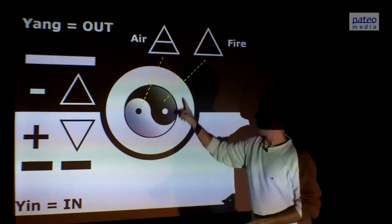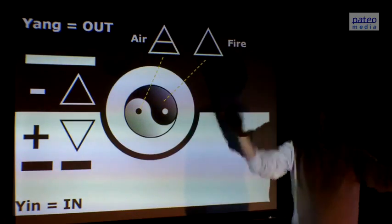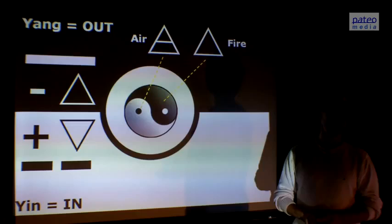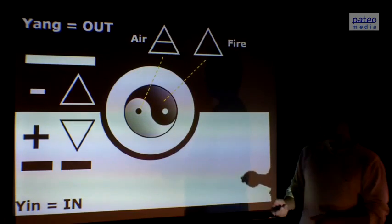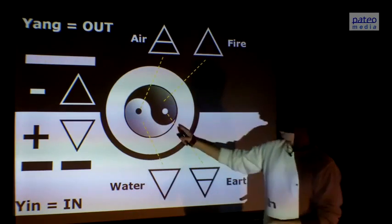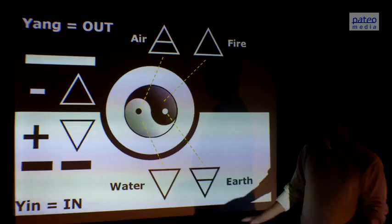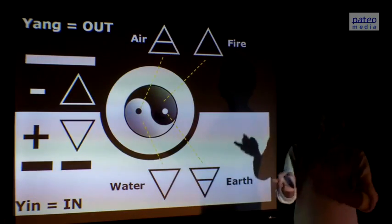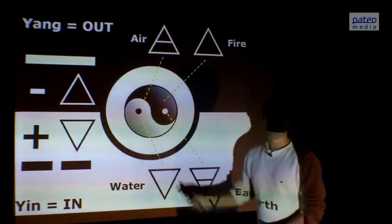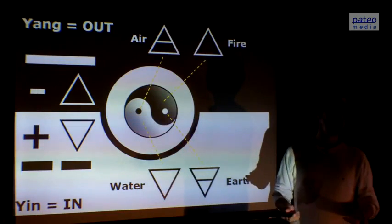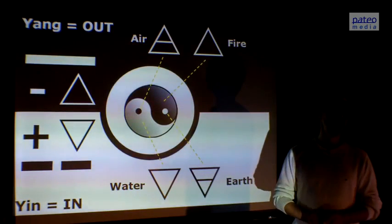And the big black drop is representing the outer side of the male energy, which is fire. And on the other side, the inner part, the smaller part, is the earth energy going into the core, and the outer side of yin is water. So we can see these four energies present in the symbol of Tao.